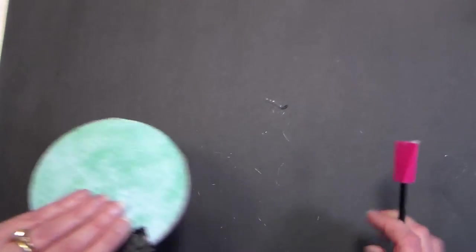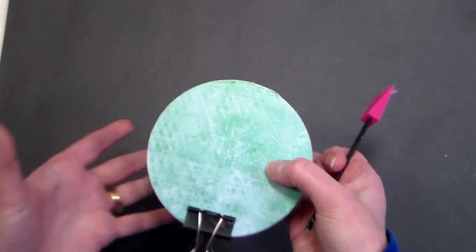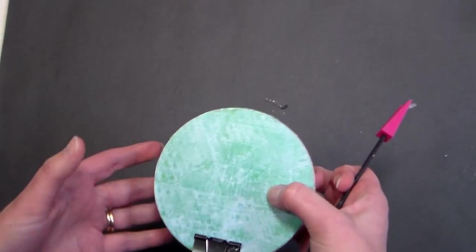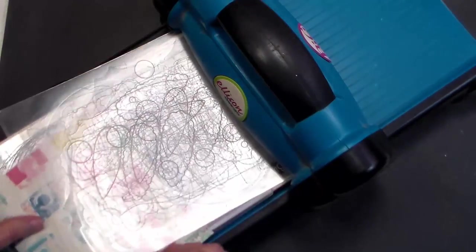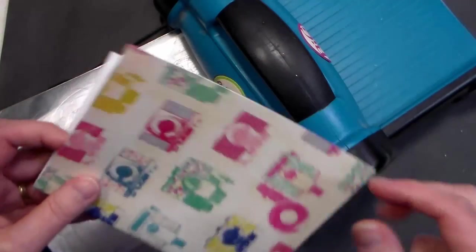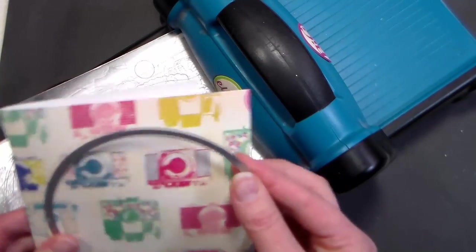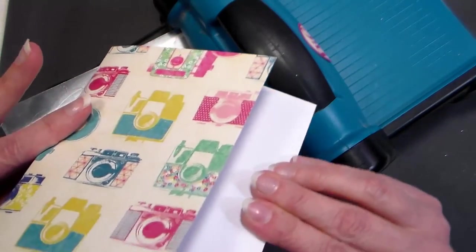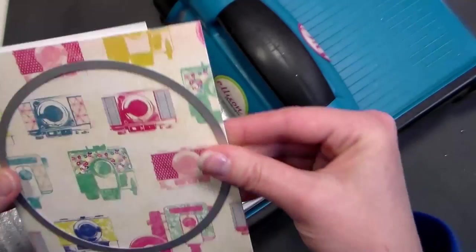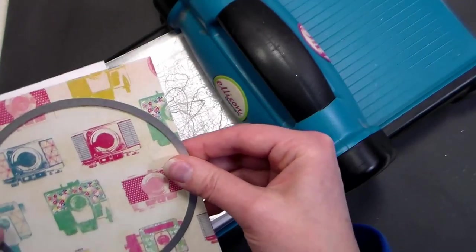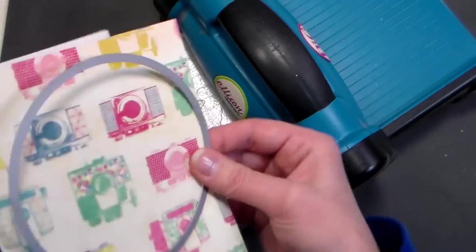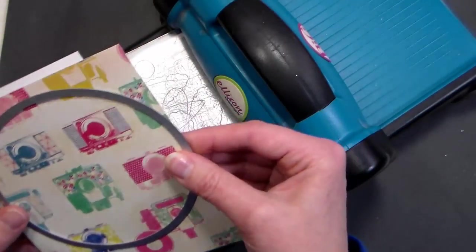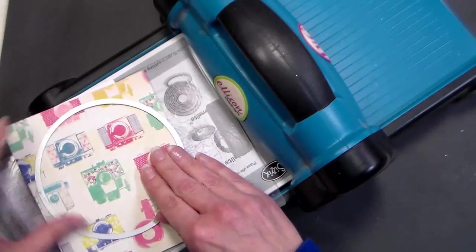Now while that's drying we're going to die cut our cover. Of course you can cut all this by hand. You could trace a circle, cut it out by hand, or use some other type of cutter. I use my die cut machine because I had one, but you don't have to have one. So I'm just going to grab my big shot machine, and what I did was I took a piece of this cardstock weight pattern paper, and I just kind of folded it in half, and what I'm going to do is I'm going to cut a circle. Now this isn't quite big enough for me to get a full cover on each side, but it doesn't really matter. We only need the full cover on the top.